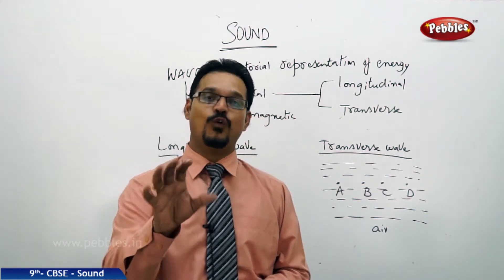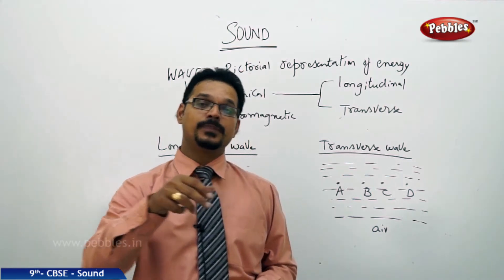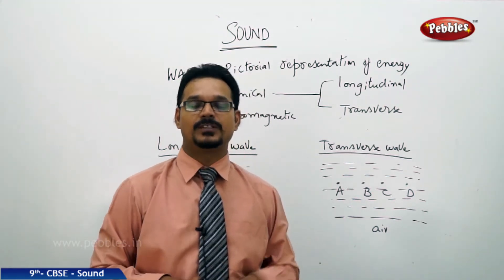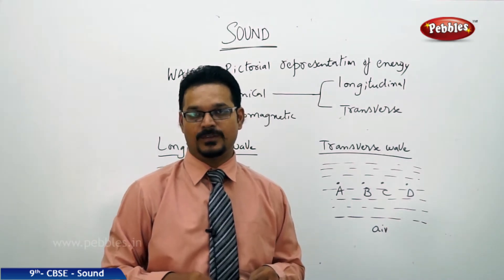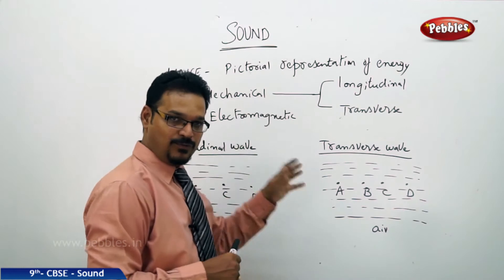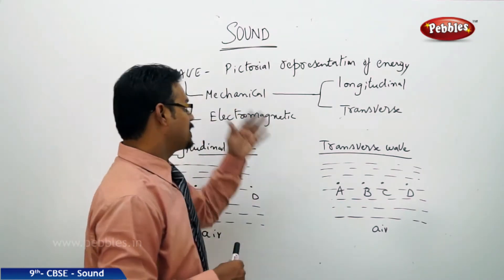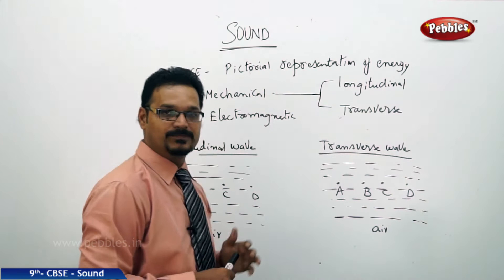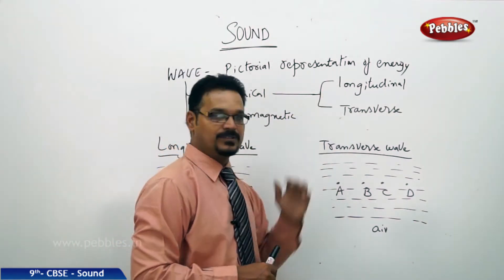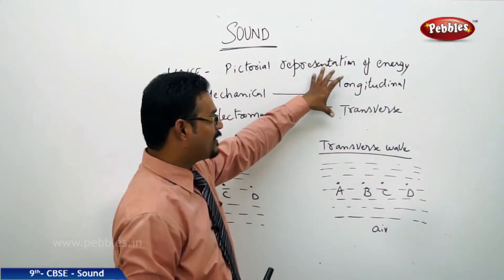Coming to mechanical waves — a mechanical wave is produced because of mechanical force. That mechanical force is applied through muscular force or some machinery force. Based on the mechanical force, mechanical energy is produced, and from that, a mechanical wave is generated. Mechanical waves are again classified into two types: longitudinal waves and transverse waves.